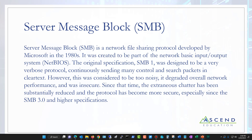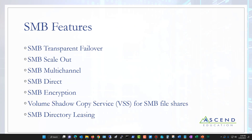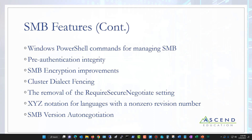Shared folders work using a protocol called Server Message Block. SMB version 1 has been hacked, is no longer recommended, and was very noisy on the network. Now we use SMB version 3, which includes transparent failover, scale-out, multichannel, and Direct. The newest versions also include PowerShell commands for managing SMB shares, pre-authentication integrity, and SMB encryption so there are no man-in-the-middle attacks grabbing data in transit.